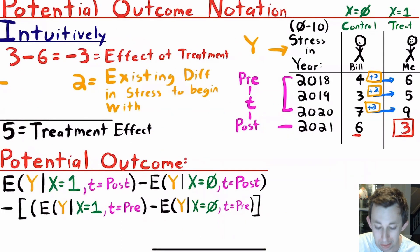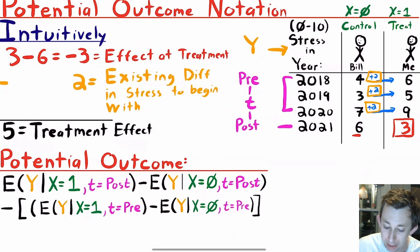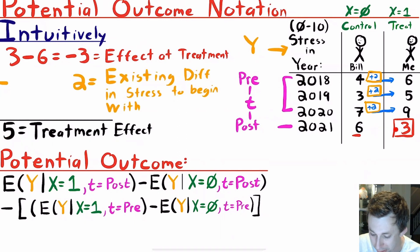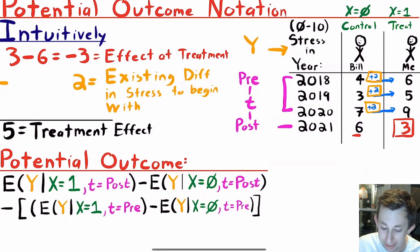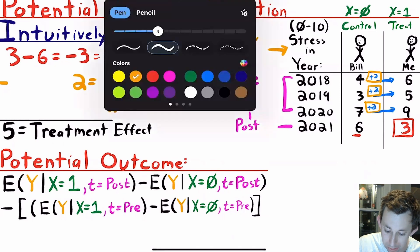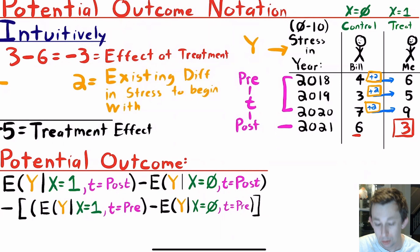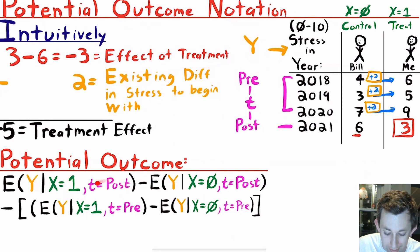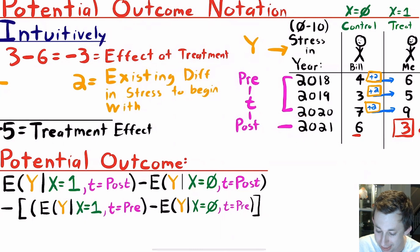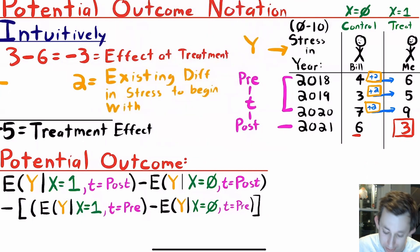To make this a little more rigorous and mathematical, let's use potential outcome notation. The way we get to a treatment effect of minus five: there is an effect at treatment of minus three — in the treatment period I am three points less stressed than Bill — and there was already a two-point existing difference in the pre-period. Putting those together, we get an average treatment effect equal to minus five. In potential outcome notation, it's the expected value of Y given you're treated in the post period, minus the average Y for the control group in the post period — in this case 2021. Then we subtract another difference, hence why it's called difference-in-differences: the difference in Y between the treated people in the pre-period.